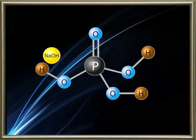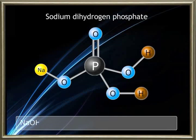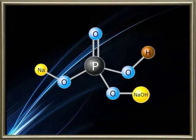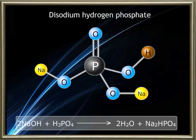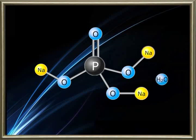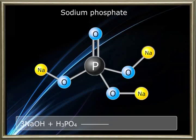From the structure of phosphoric acid we can see that it contains three replaceable hydrogen atoms. So it reacts with three molecules of sodium hydroxide giving three different phosphates: namely sodium dihydrogen phosphate, disodium hydrogen phosphate, and sodium phosphate.